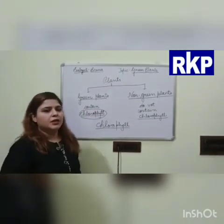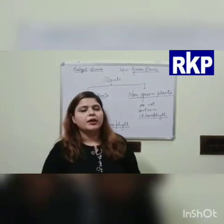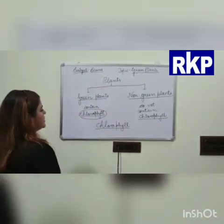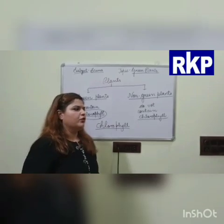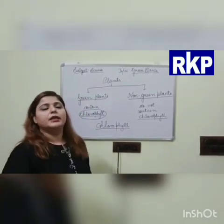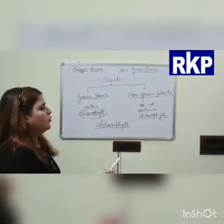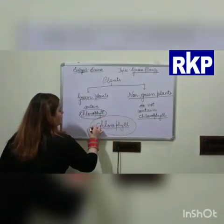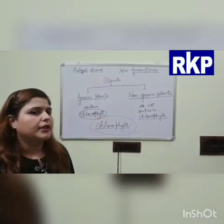For trees, the trunk is woody, hard, and brown in colour, and the branches are also brown, but the leaves of the trees are green in colour — meaning they contain chlorophyll. However, if you look at plants like mushroom, not even a single part is green in colour. This means that plant does not contain chlorophyll, which is why it is not green and is known as a non-green plant.